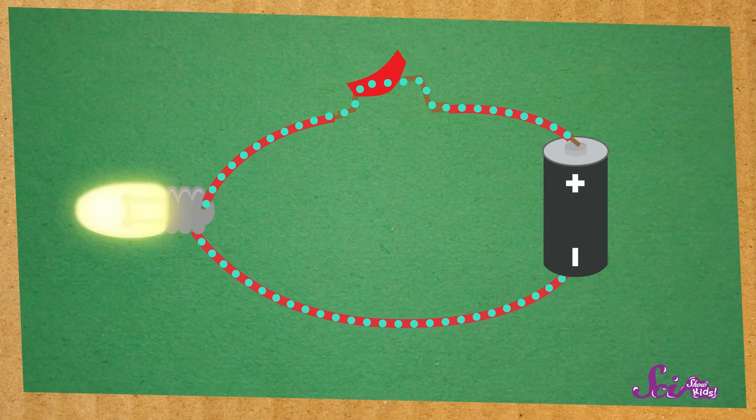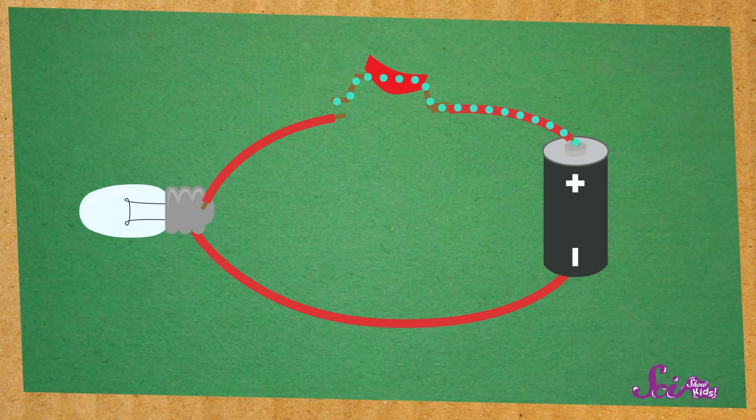When the switch is on, there's no space in the circuit and the light bulb is lit. But when we move the switch off, we open up a space. The electricity can't jump over the space, so it can't reach the light bulb. And the light bulb stays off.